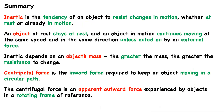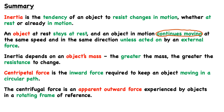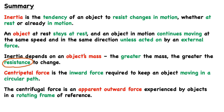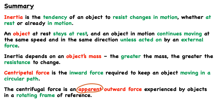To review the key information: inertia is the tendency of an object to resist changes in motion, whether at rest or already in motion. An object at rest stays at rest, and an object in motion continues at the same speed and direction unless acted on by an external force. Inertia depends on mass — the greater the mass, the greater the resistance to change. The centripetal force is the inward force required to keep an object moving in a circular path, and the centrifugal force is an apparent outward force experienced by objects in a rotating frame of reference.